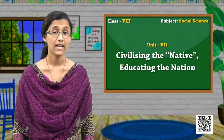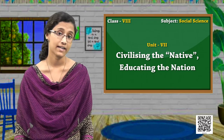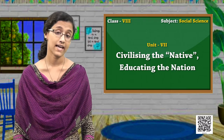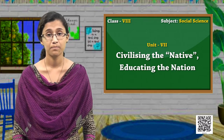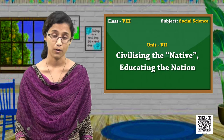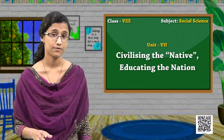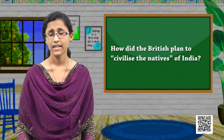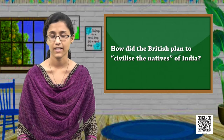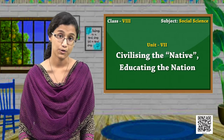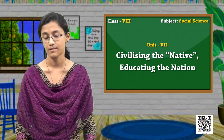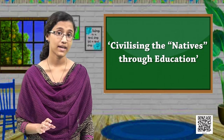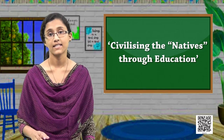Some of the ideas they had about undeveloped or primitive people and the steps taken to civilize them were actually quite horrible and wrong, but they used this claim to justify their colonial rule in India. To civilize the natives, the British introduced new laws and established an education system. In this lesson we will be focusing on the steps taken by the British to civilize the natives of India.